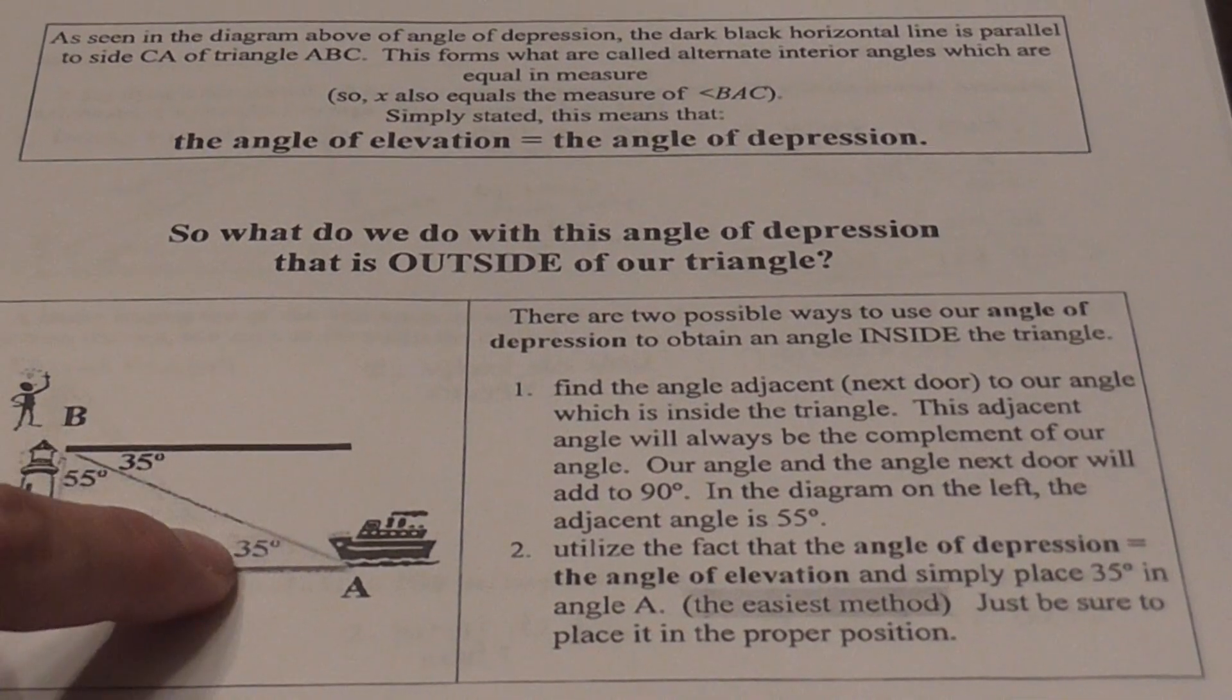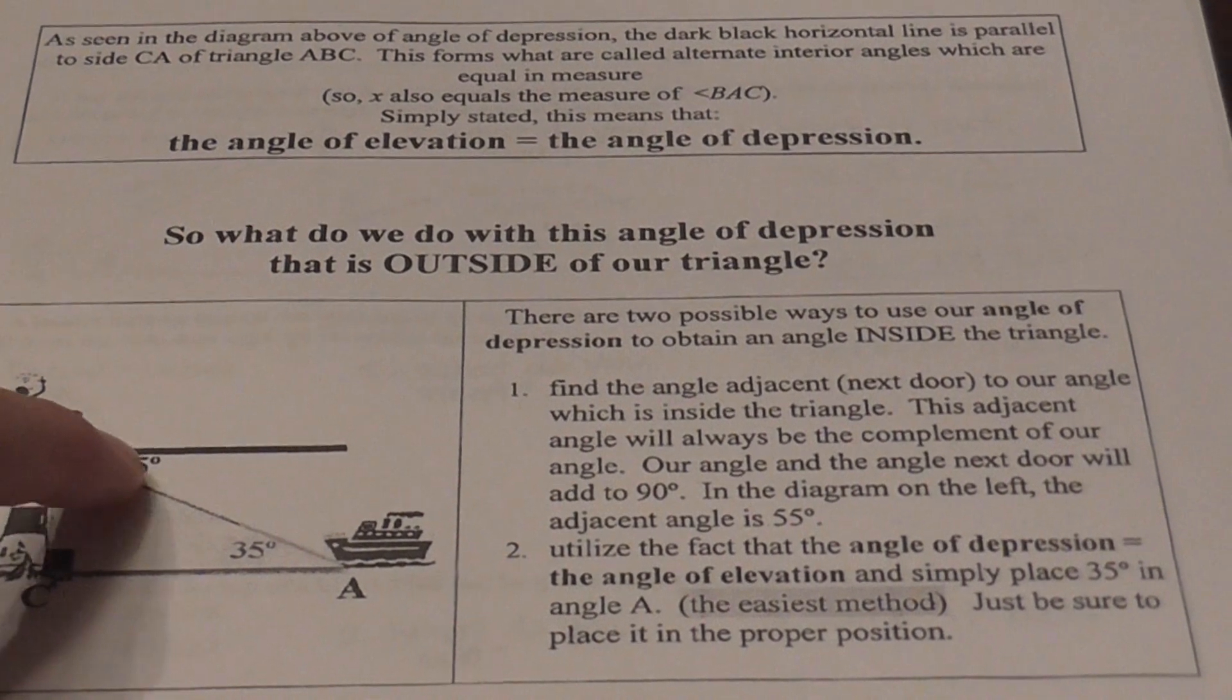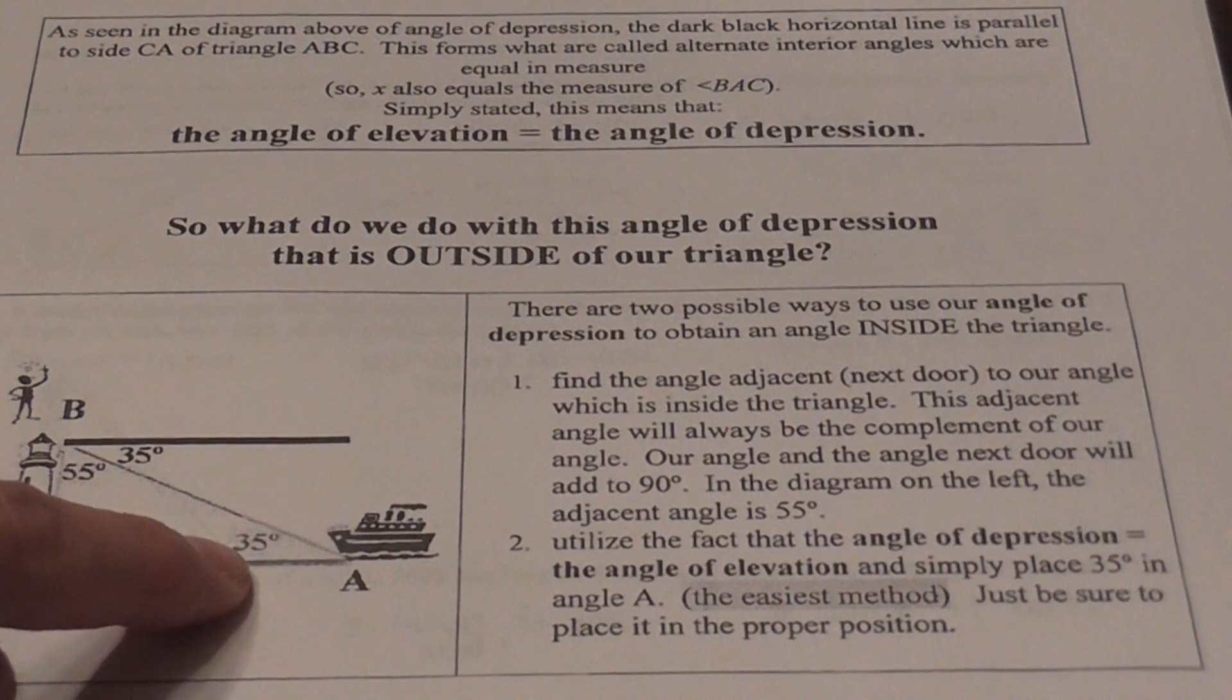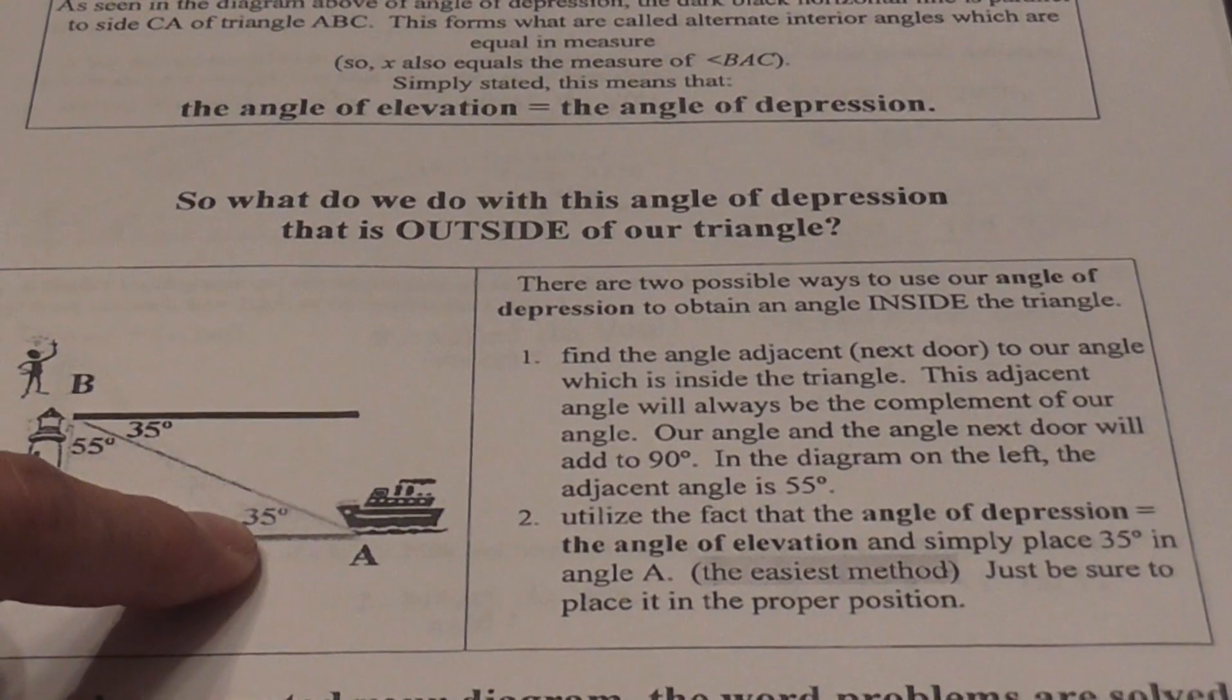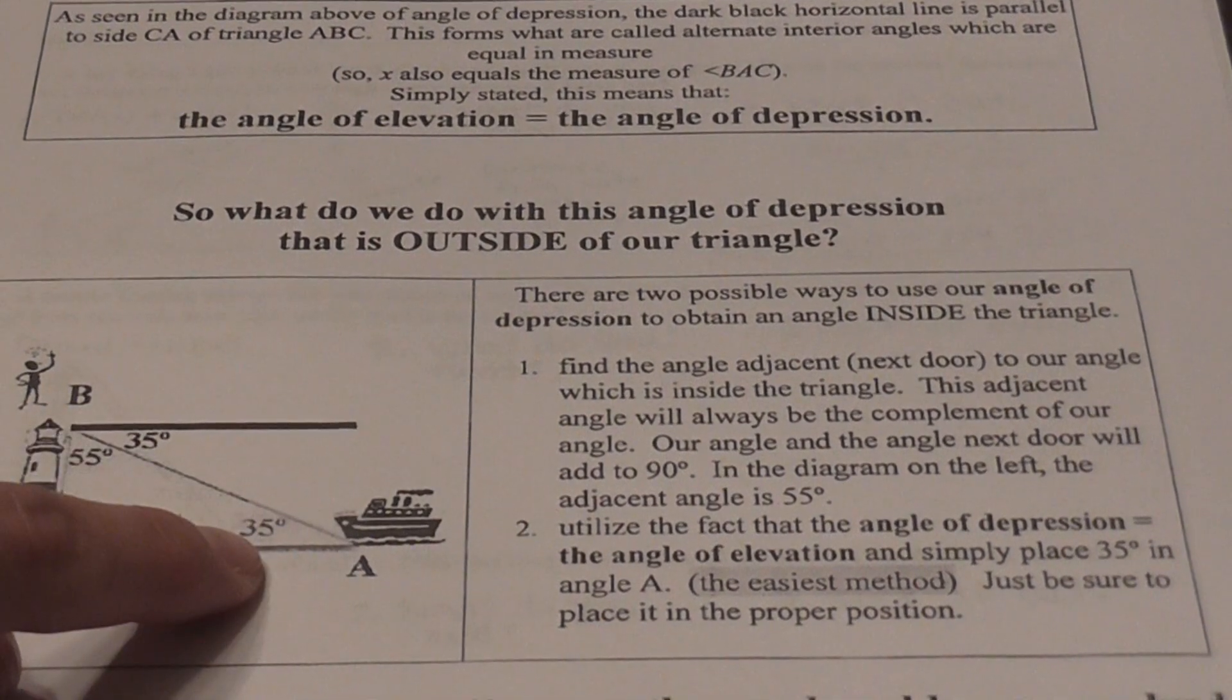Or because they are alternate interior angles, you know they're equal to each other. So because they're equal to each other, you just take your angle of depression, move to the other angle in your triangle, the one it's not close to, and make that the angle that's inside the triangle. That's the easiest thing to do. You just need to make sure you're putting the angle in the right position.